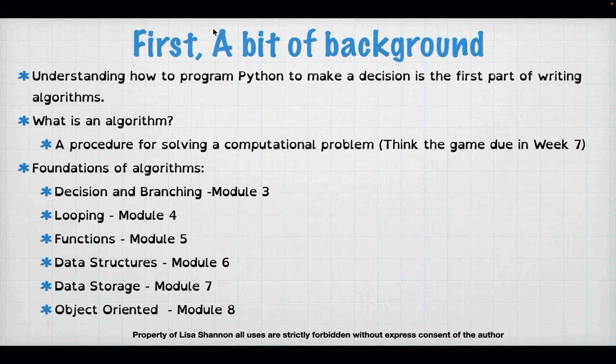So that's what this week is about. Let's talk about a little bit of background and where we're headed. This week is really the first week in understanding how to write an algorithm. An algorithm is just a procedure for solving some computational problem. Think your game, think any lab — they are all algorithms you are developing. And to do that, we have to be able to have a computer make a decision.